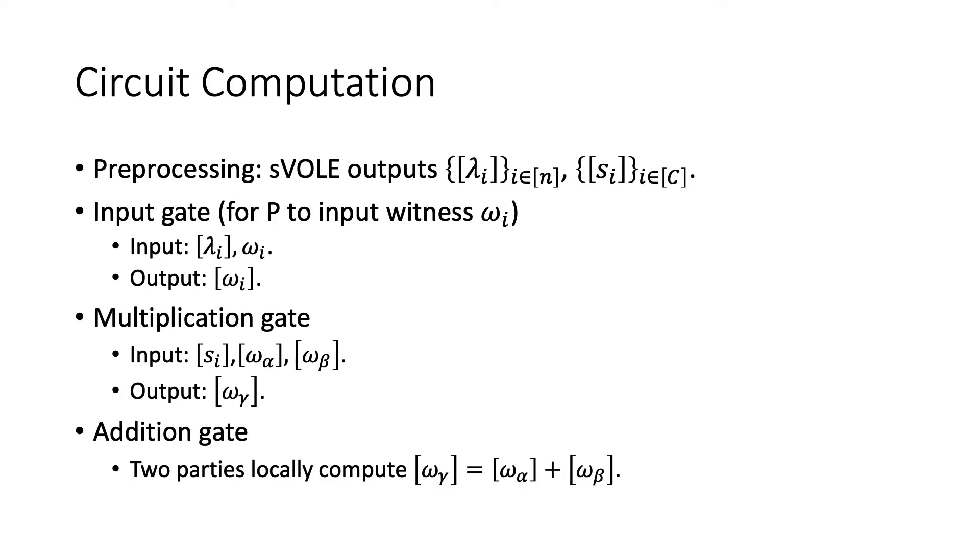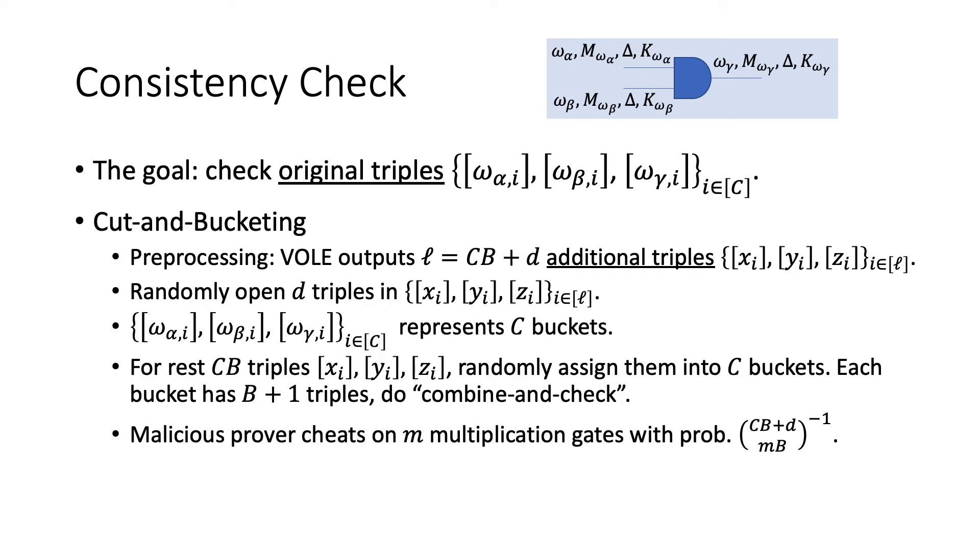For the circuit computation, they use the same trick to deal with the input gate and the multiplication gate. In the preprocessing phase, the prover and verifier use the sVOLE to output random authenticated values lambda i and si. For the input gate, the prover prepares the witness wi and uses the authenticated lambda i to get the authenticated wi. For the multiplication gate, two parties prepare the authenticated si. The prover will locally fetch the value of w alpha and w beta and compute the product of them, which is w gamma. And it inputs the w gamma to get the authenticated output of the multiplication gate. For the addition gate, this can be done for free because the authenticated values are additively homomorphic.